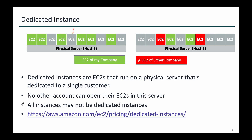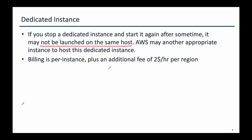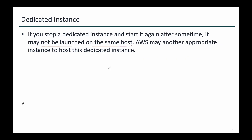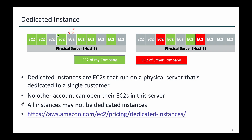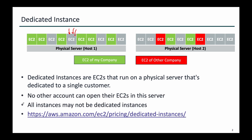Now let's move on and understand a few more points about dedicated instance. If you stop a dedicated instance and start it again after some time, it may not be launched on the same host — AWS may find another appropriate host for it. Billing is done per instance plus an additional fee of $2 per hour per region. So if I have a dedicated instance, I will be billed for this EC2 plus a 10% premium on the on-demand price. And there is a $2 per region per hour fee which I have to pay if I have at least one dedicated instance — whether I have one or 1000 dedicated instances in that region, I still pay the same $2 per hour per region.